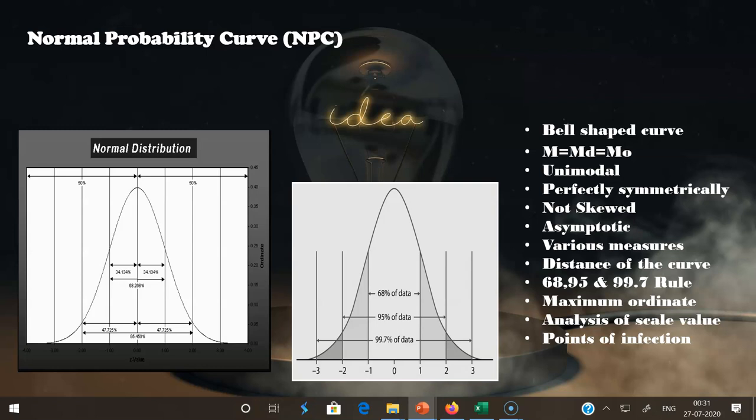Regarding the distance of the curve: for practical purposes, the baseline is divided into six sigma distances from −3σ to +3σ. About 99.73% of cases fall within ±3σ. The distance from −2σ to +2σ covers 95.44%, and from −1σ to +1σ covers 68.26%. This is the basis of the 68-95-99.7 rule.